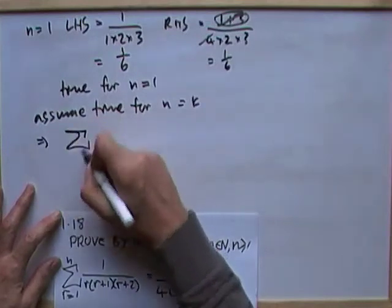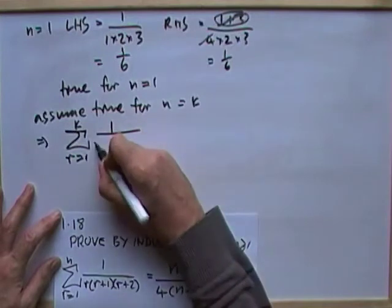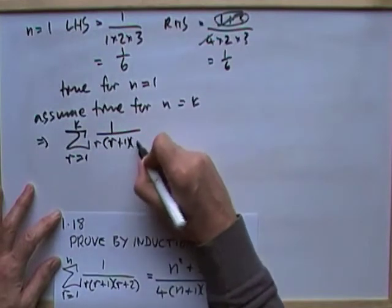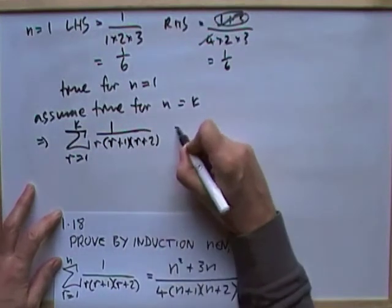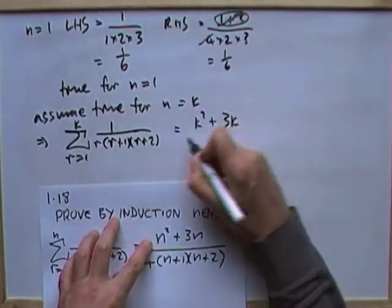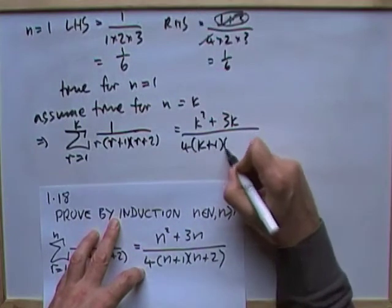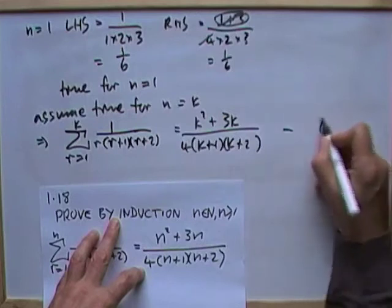Which would mean that sigma r equals 1 to k of all of this, r times r plus 1 times r plus 2, would equal this with the n's replaced by k's, k squared plus 3k all over 4 times k plus 1 times k plus 2. Call that 1.